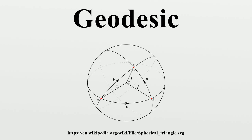The most familiar examples are the straight lines in Euclidean geometry. On a sphere, the images of geodesics are the great circles. The shortest path from point A to point B on a sphere is given by the shorter arc of the great circle passing through A and B. If A and B are antipodal points, then there are infinitely many shortest paths between them. Geodesics on an ellipsoid behave in a more complicated way than on a sphere. In particular, they are not closed in general.